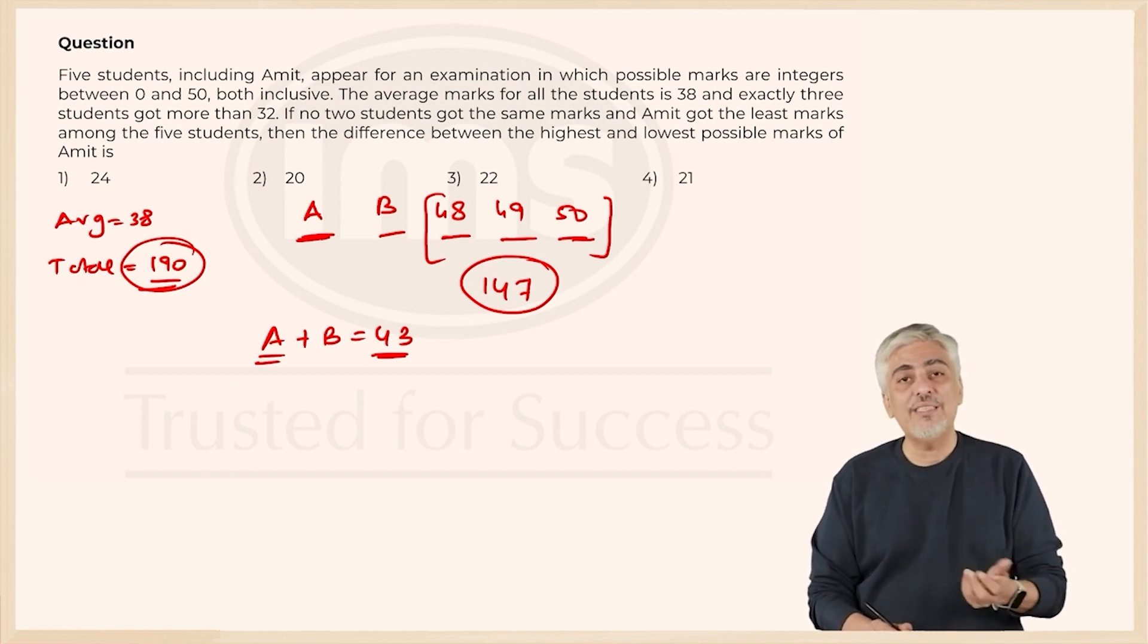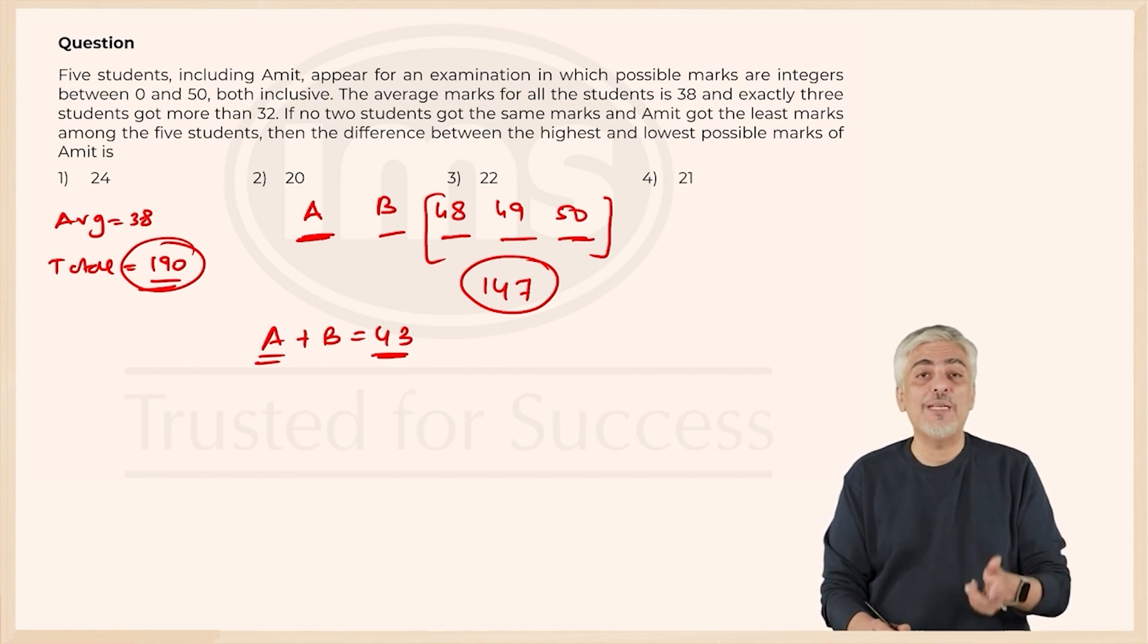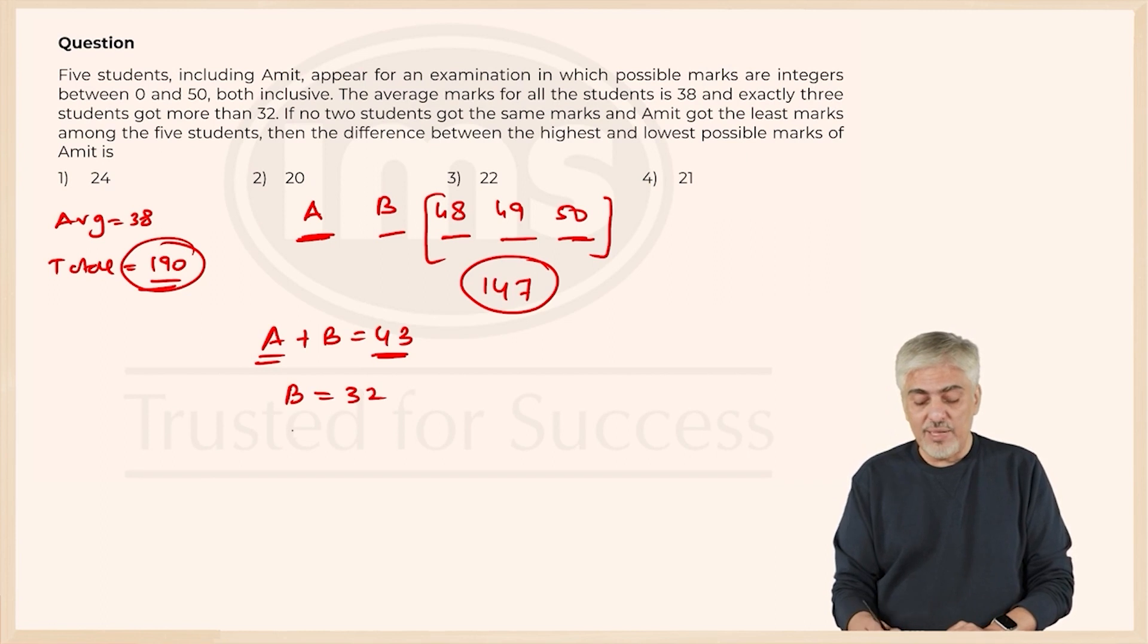What is the largest value B can take? I am sure a lot of people made a mistake over here, would have taken B as 31. B can take 32 because they said three people got more than 32, so B can get 32. If B can get 32, therefore A can get 11, and that is the smallest value A can get.